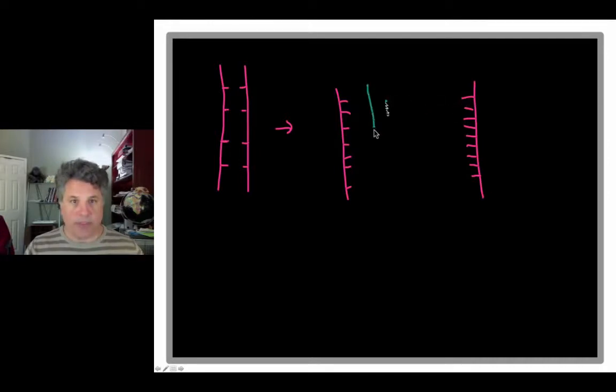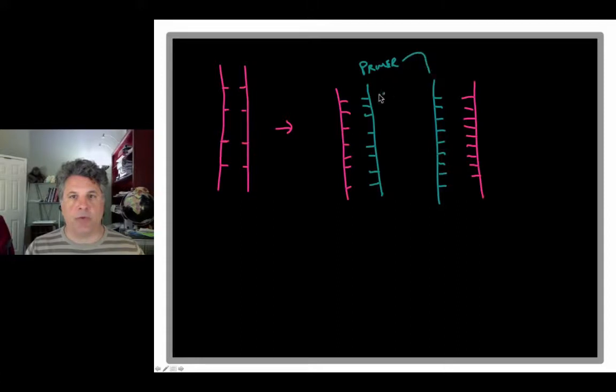So we build two new daughter strands of DNA using the base pairing rules of A, T, G, C to ensure that the proper nucleotides are inserted opposite the template strand. So here we have the primer strand of a new molecule. These are both primer strands here. And then we have the template strand here and here.